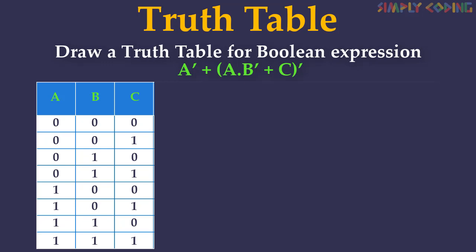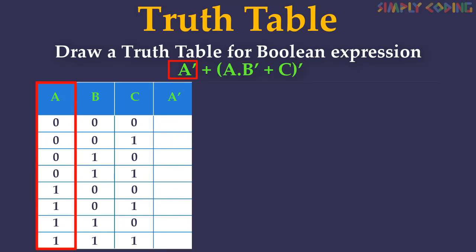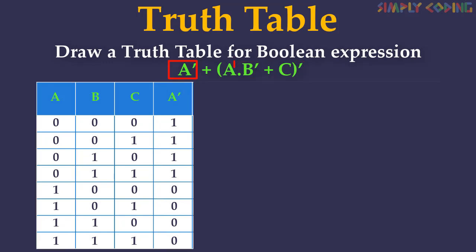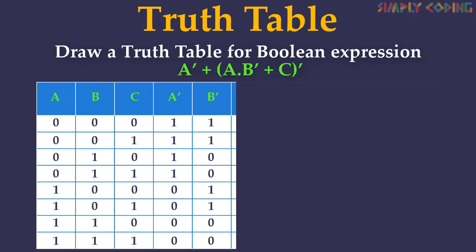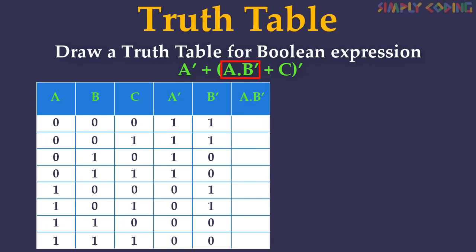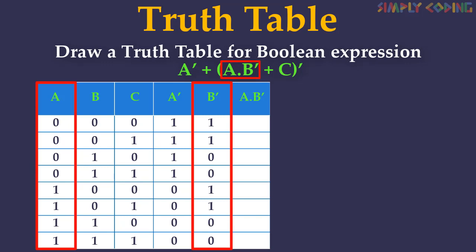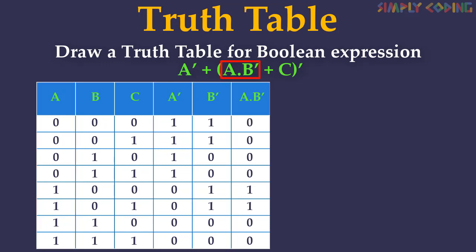We use the standard BODMAS principles of algebra. We first solve for NOT used for individual input terms — here there is not-A and not-B. For not-A we take the A column and just reverse it; similarly for not-B we take the B column and reverse it. Next we solve the sub-expression inside the bracket. We first solve A dot B-bar. Since this is AND, it will be one only when both inputs are one.